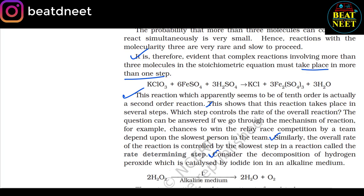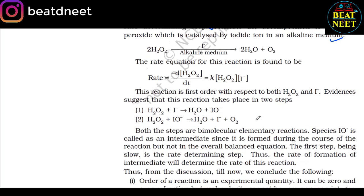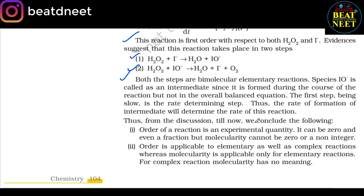Consider the decomposition of hydrogen peroxide catalyzed by iodide ion in alkaline medium: 2H₂O₂ → 2H₂O + O₂. The rate equation is: rate = −d[H₂O₂]/dt = k[H₂O₂][I⁻]. This reaction is first order with respect to both H₂O₂ and I⁻. Evidence suggests it takes place in two steps: (1) H₂O₂ + I⁻ → H₂O + IO⁻; (2) H₂O₂ + IO⁻ → H₂O + I⁻ + O₂. Both steps are bimolecular elementary reactions. The species IO⁻ is called an intermediate since it is formed during the reaction but does not appear in the overall balanced equation. The first step, being slow, is the rate determining step.